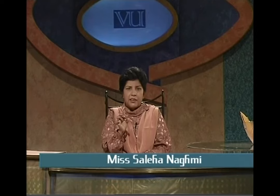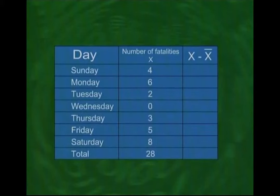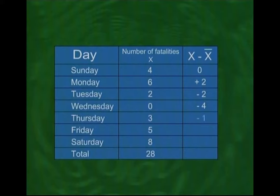To measure the distance of each individual x value from the mean, we compute all these deviations as shown in the third column of the table. The deviations of the x values from the arithmetic mean of 4 come out to be 0, +2, -2, -4, -1, +1, and +4. Some deviations are positive and some are negative — if x is greater than the mean, x minus x-bar is positive; if x is less than the mean, the deviation is negative.